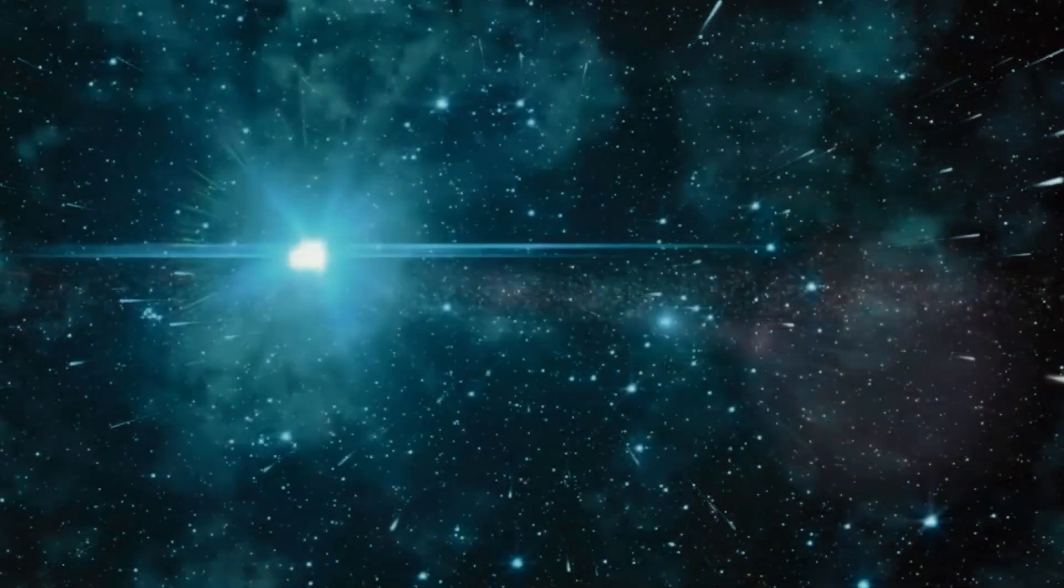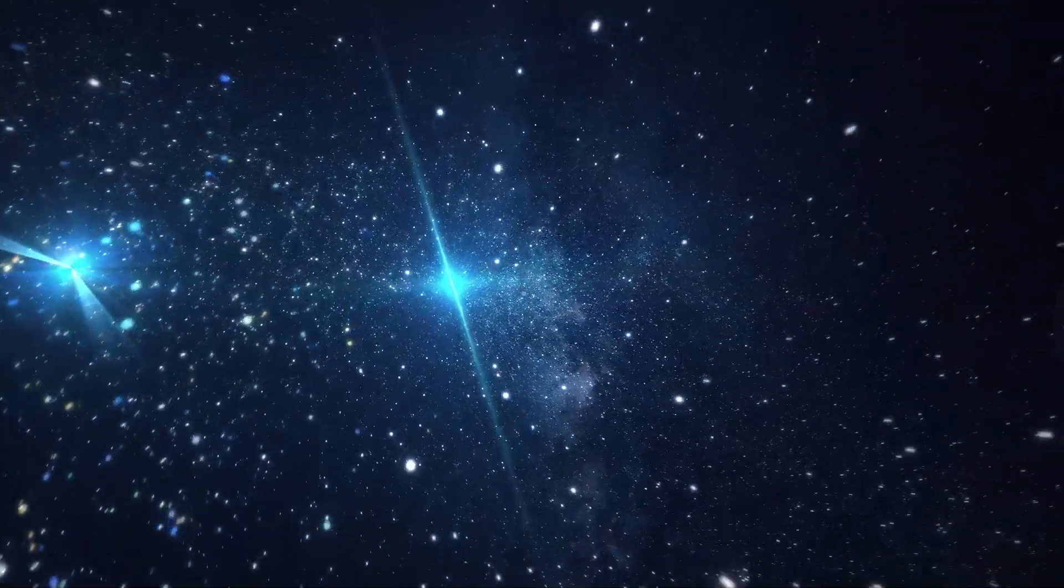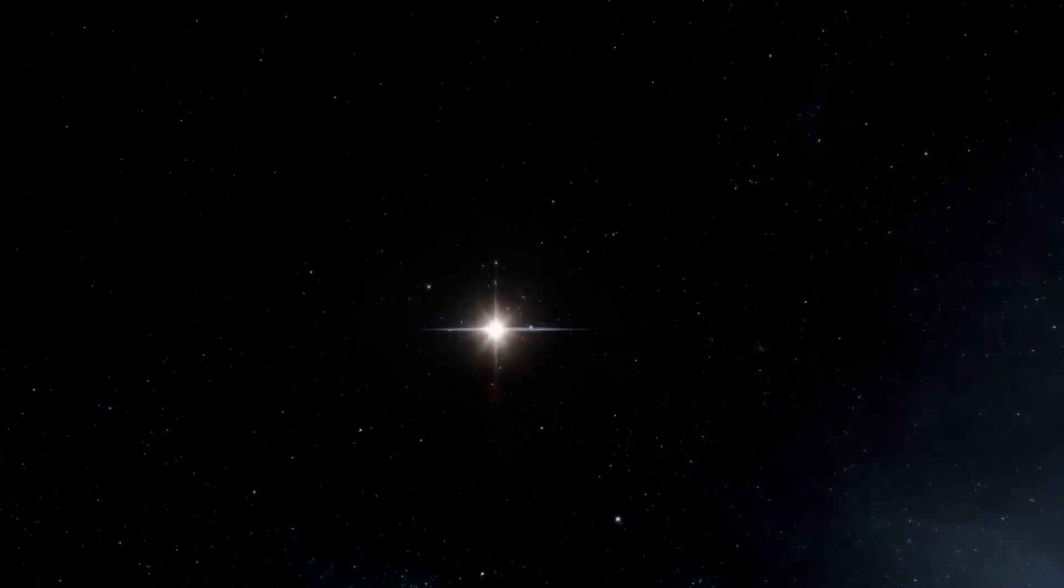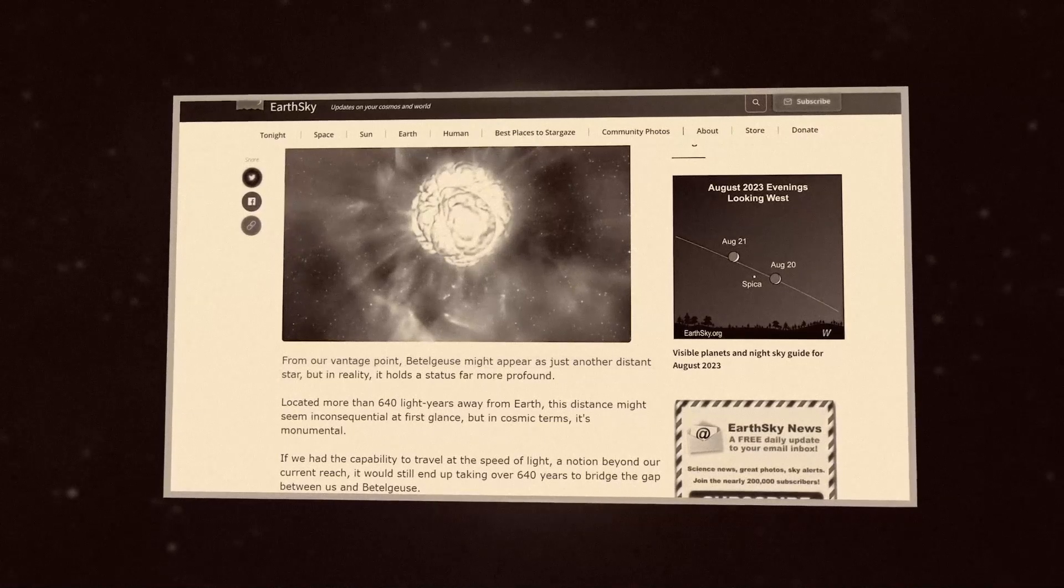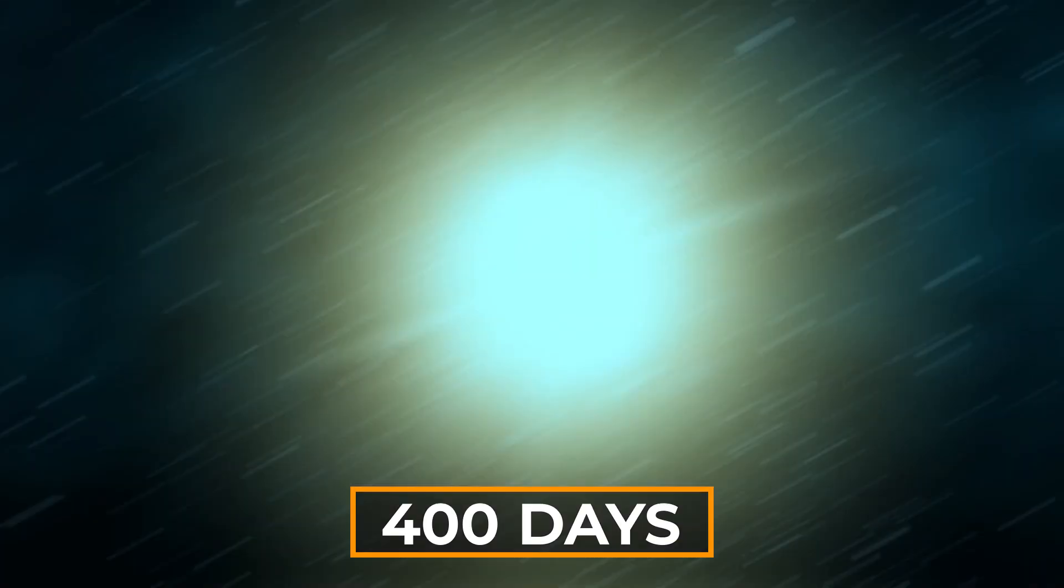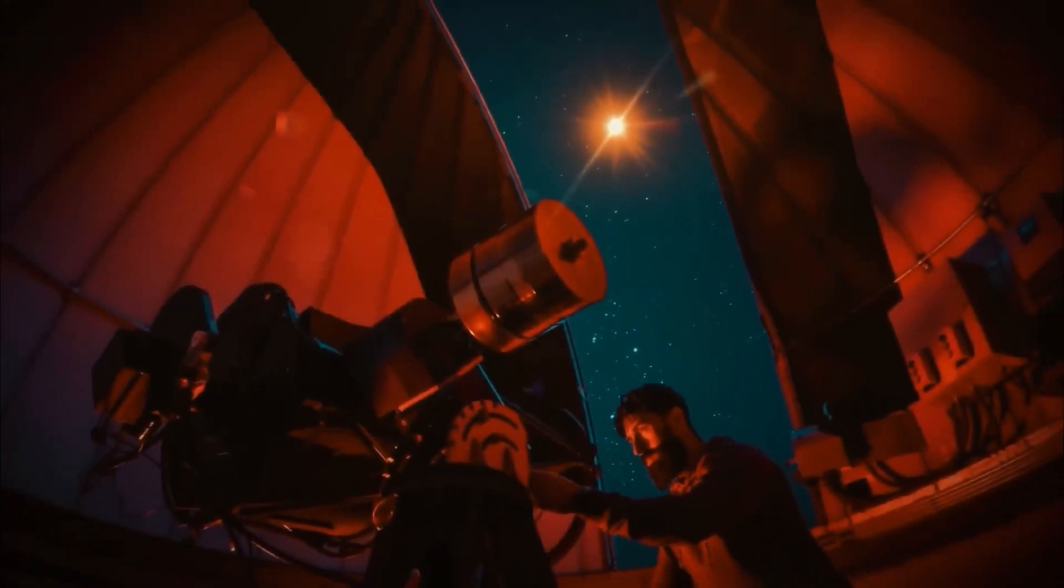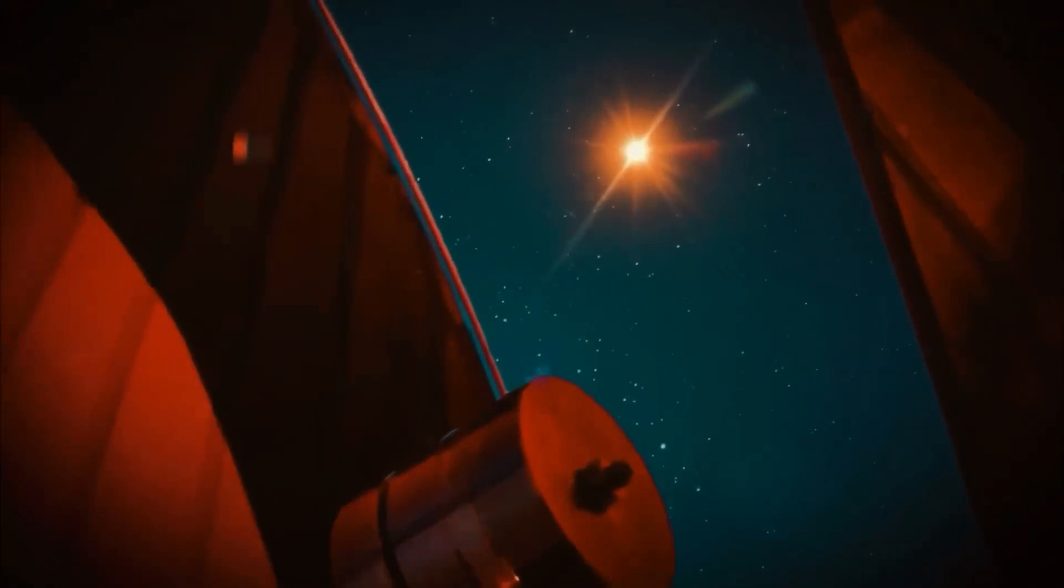Such big changes, while common in some stars, were unexpected for Betelgeuse, which usually followed a more predictable brightness pattern. This sudden surge in brightness brought Betelgeuse back into the spotlight and got everyone talking about its future. Betelgeuse has a typical brightness cycle that lasts about 400 days, but this Great Dimming seemed like it was breaking the rules and challenging what we knew about the stars above.